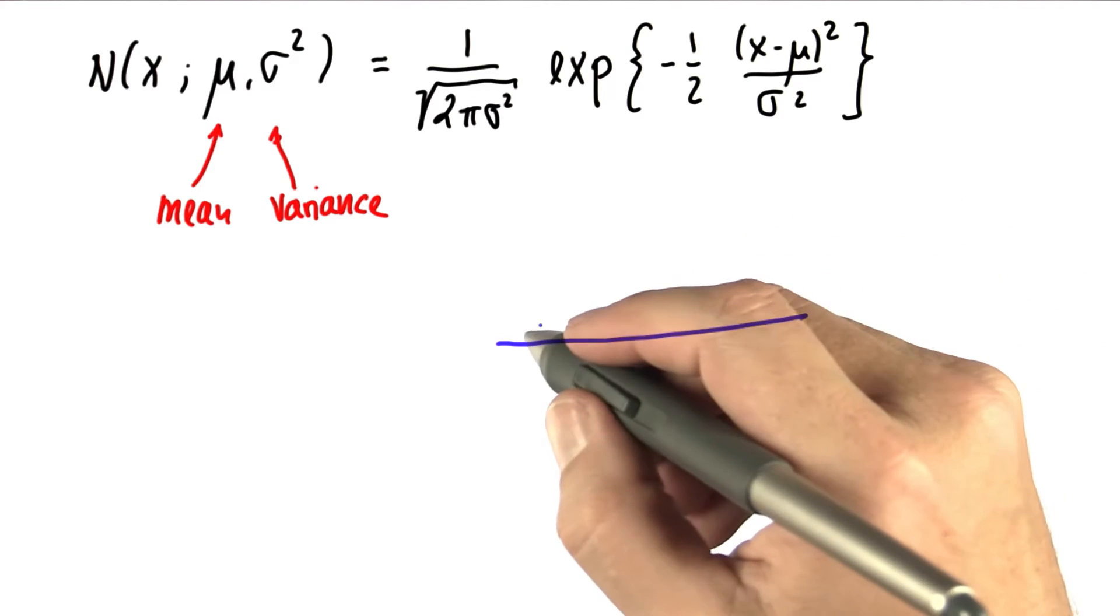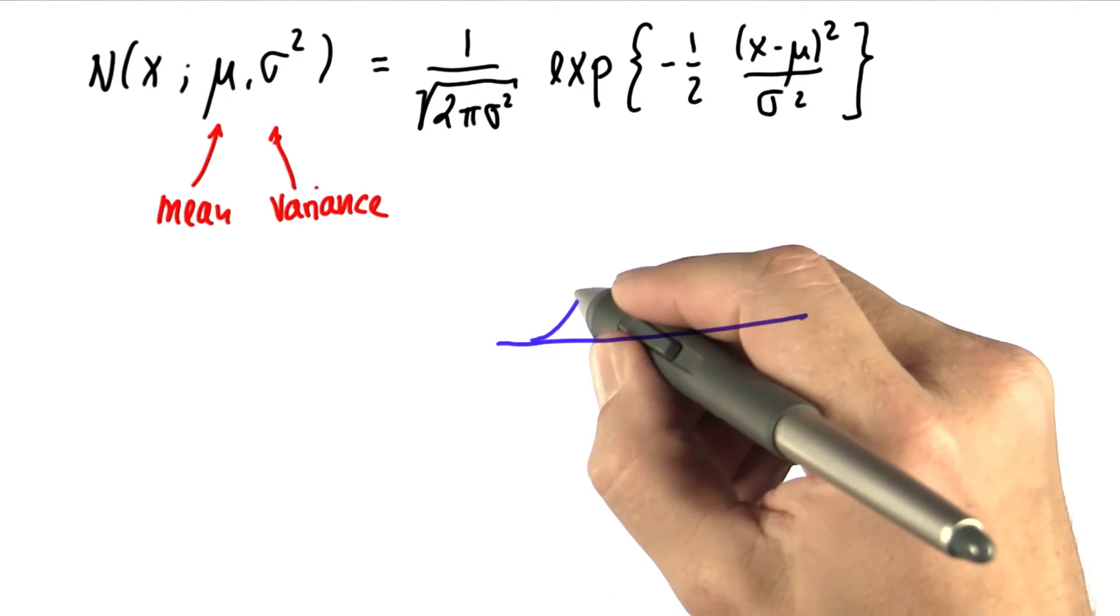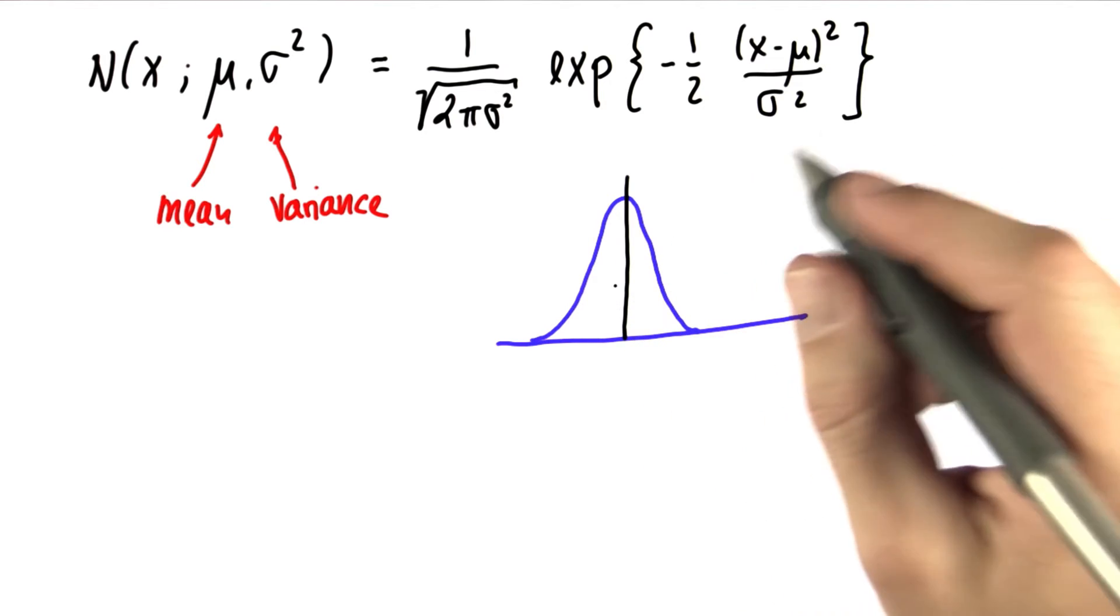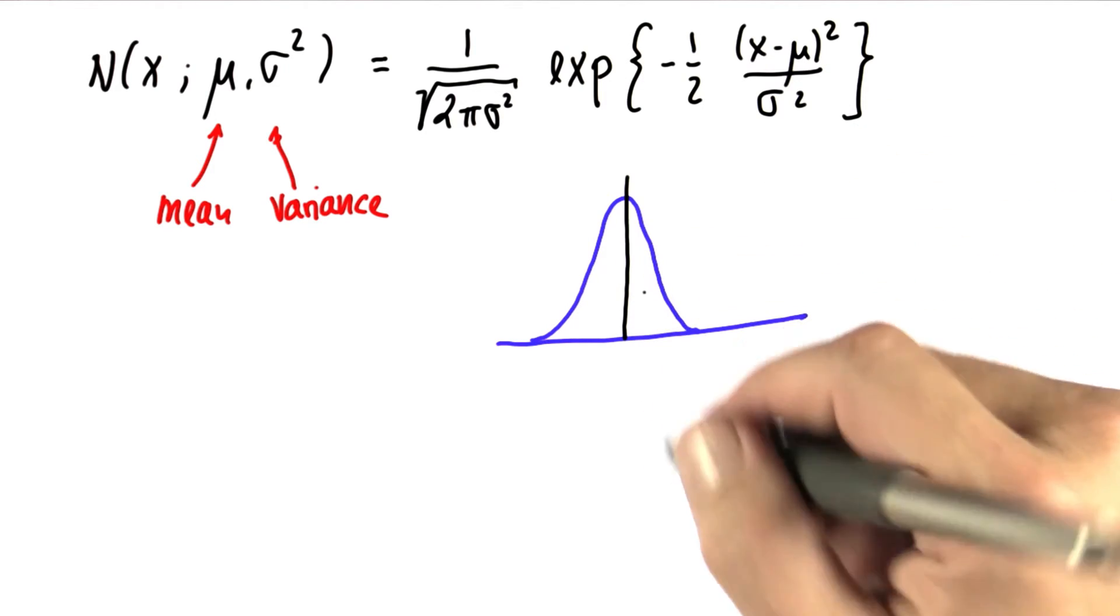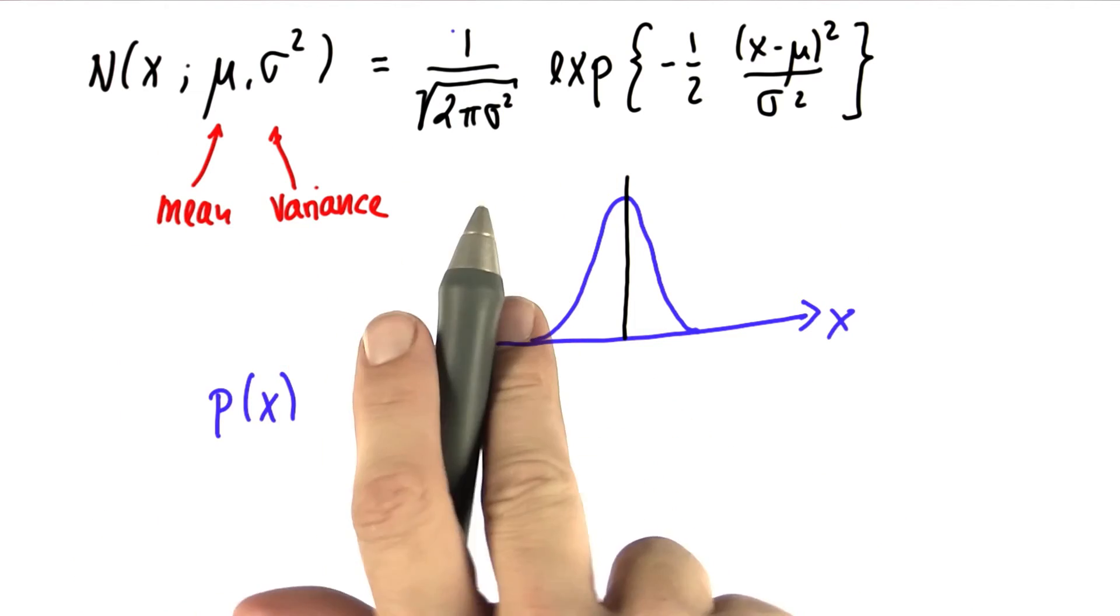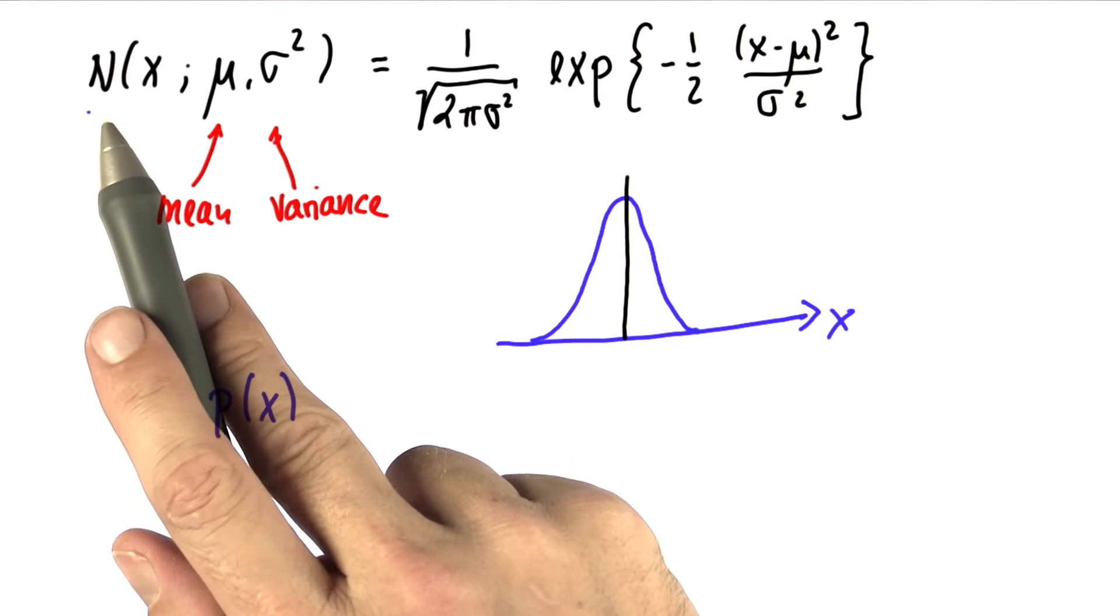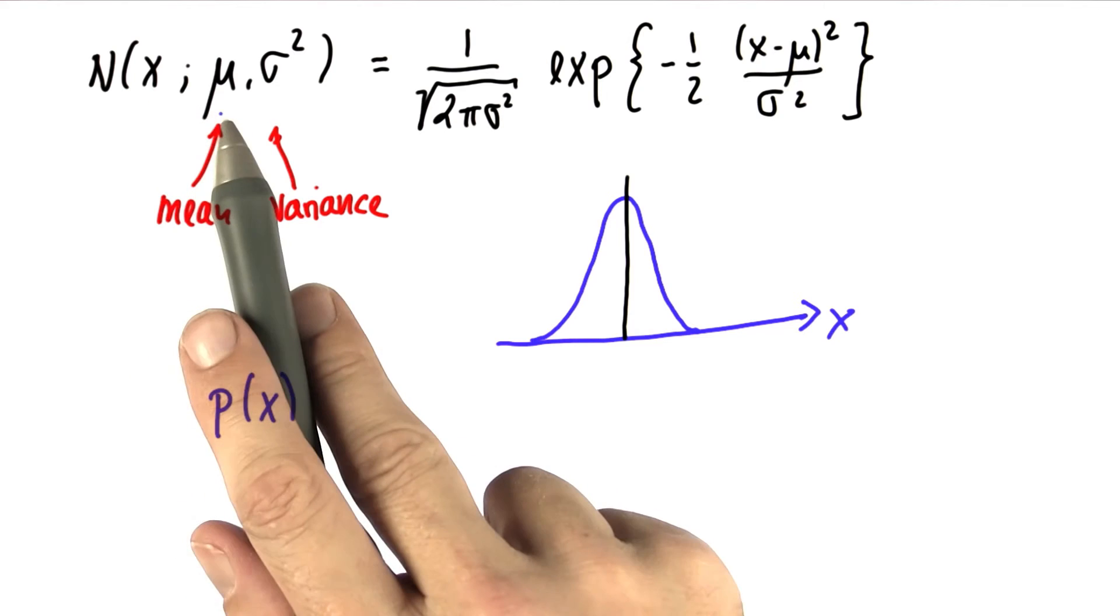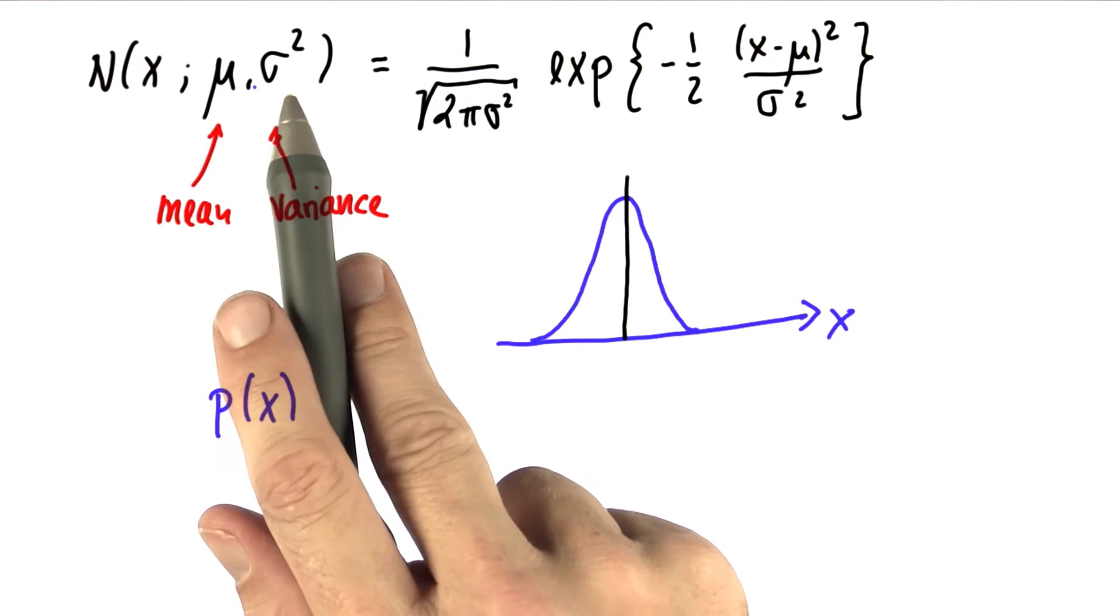So we can draw values from this normal distribution just the same way as we flipped coins before. And the way to look at this is any value x has this probability up here. This is nothing else but a notation of the probability of x for a normal distribution with mu and sigma squared.